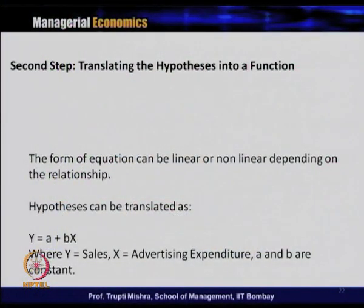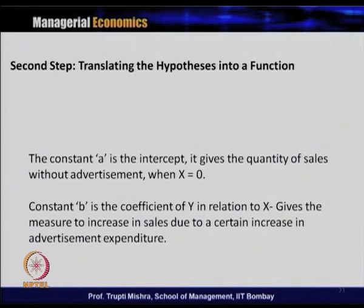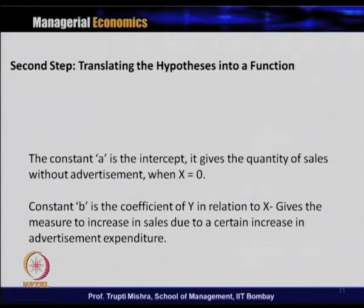The hypothesis can be translated into an equation: y = a + bx, where y is the sales, x is the advertising expenditure, and a and b are constants. Here y is the dependent variable and x is the independent variable. Constant a is the intercept — it gives the quantity of sales without advertisement when x is equal to 0. Constant b is the coefficient of x in relation to y — it gives the measure of increase in sales due to a certain increase in advertisement expenditure.